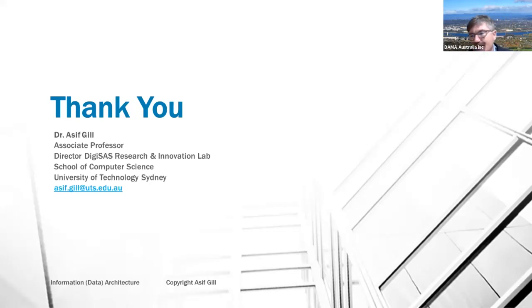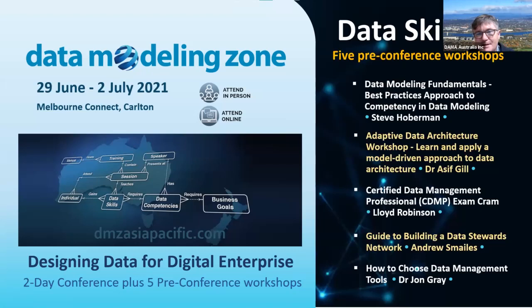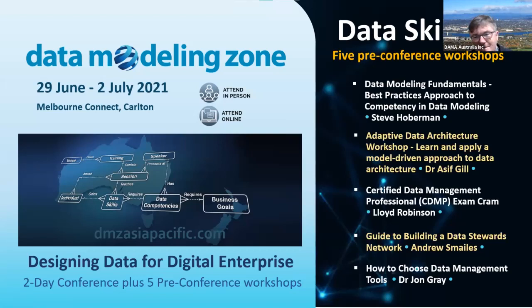Tell us about the course you're running at Data Modeling Zone in June. It's the 29th and 30th of June — a two-day workshop. Data Modeling Zone is a conference for data modelers and data architects; it's an international conference run in Australia, the US and Europe every year. The conference itself is on the 1st and 2nd of July. If you check out the website, all the details are there. There's a big skill shortage in data architecture in Australia at the moment, and it'd be good to see you there.